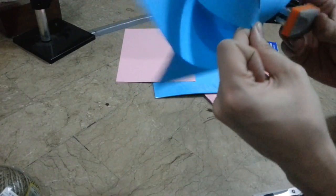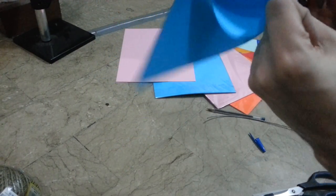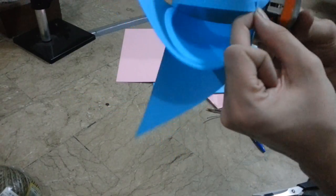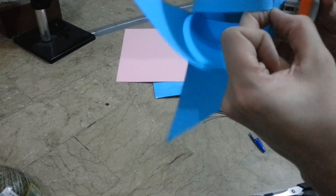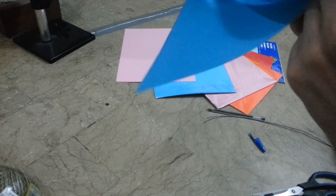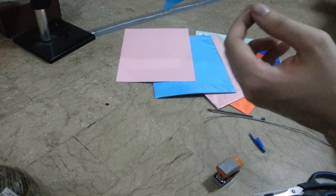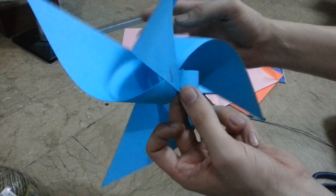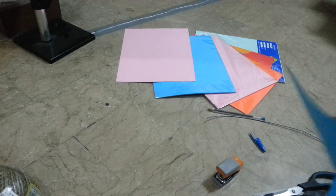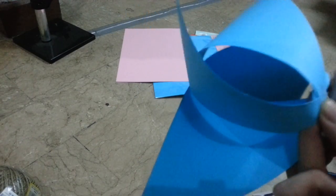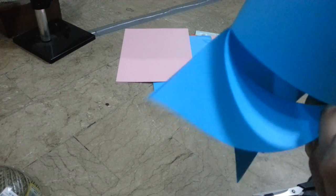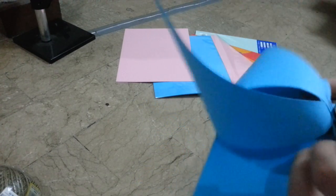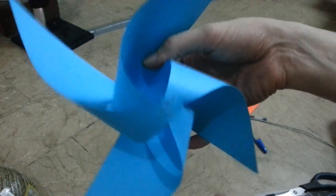And what you do then is just take your stapler. Got to make sure that you keep all the bits together in the middle. Just take your stapler. And then like that. And you see we've now got one pinwheel. So you see I've just added another staple just to make it more secure.